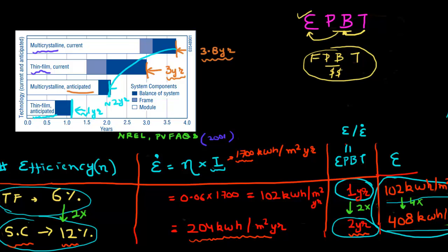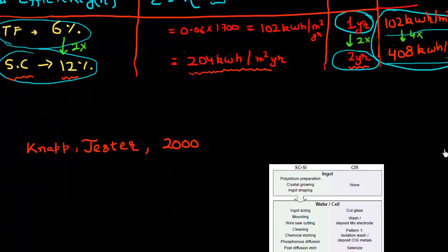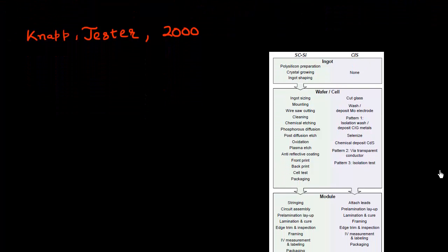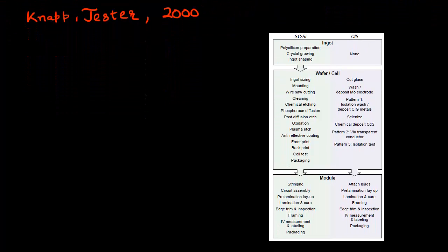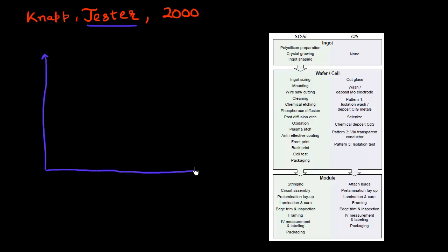This was analyzed by Karl Knapp and Theresa Jester. What they did — it was a pretty neat study — they looked at a Siemens factory. Theresa Jester was an employee of Siemens, which used to have a solar division back then. They essentially looked at the amount of energy being used in the factory — the amount of kilowatt hours being spent — as a function of the production capacity of the factory.